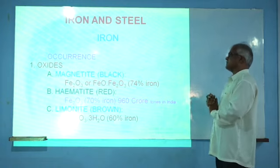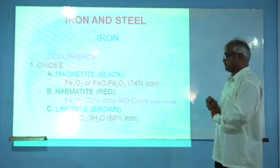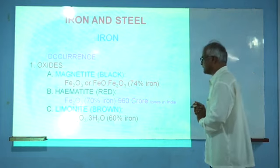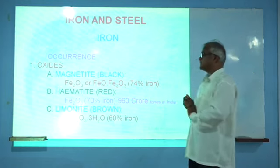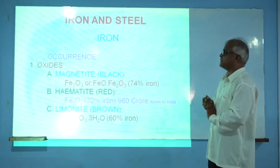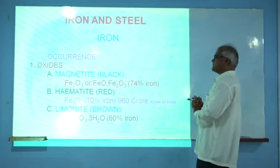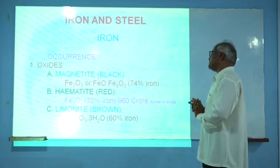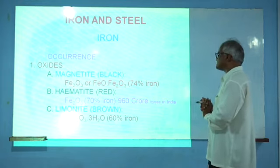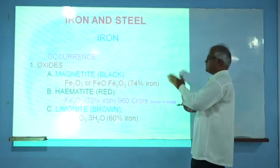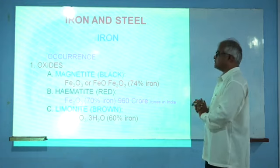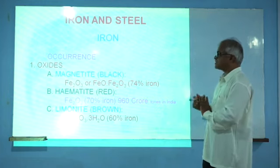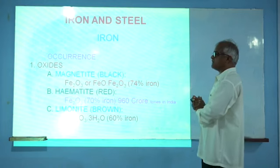The third occurrence in the form of oxide is limonite. The maximum content is the hydroxide content of iron, Fe₂O₃·H₂O, with near about 60% iron. These are the occurrences in the form of different rocks: the magnetite rock, second the hematite rock, and third the limonite rock. In India, the manufacture of iron is near about 960 crore tonnes. The maximum hematite rock is available in open areas with 70% iron content. If the hematite rock is oxidized, it converts to manufacture the maximum content of iron.